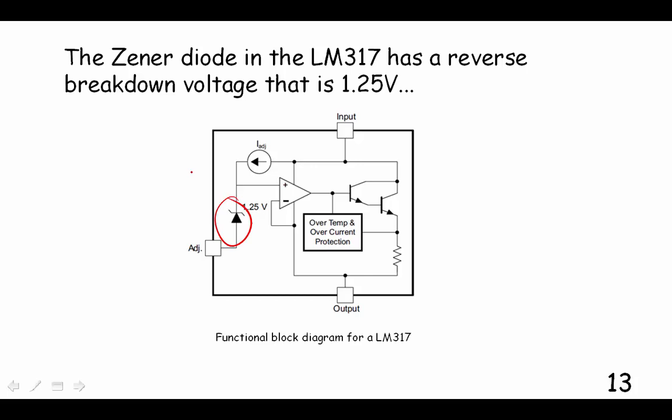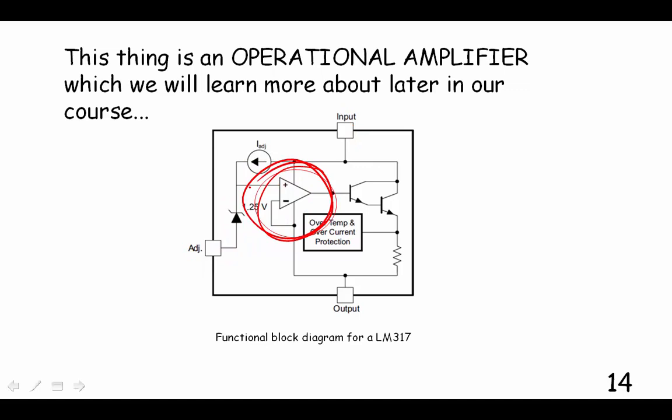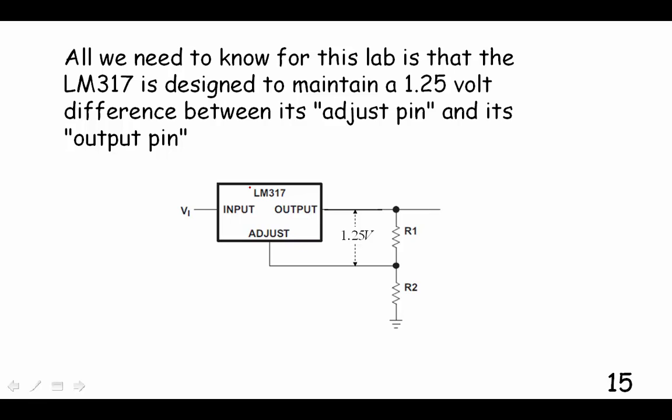Here is a Zener diode, and that's the symbol for that, and you see it's reverse biased here between the input pin and the adjust pin, and it's maintaining a 1.25 volt drop across the diode, and that's on the input of this device right here. That triangle is an operational amplifier. We're not going to go into that right now. It's later in the course. All we need to know for this lab is that the 317 is designed to maintain a 1.25 volt difference between those two pins.